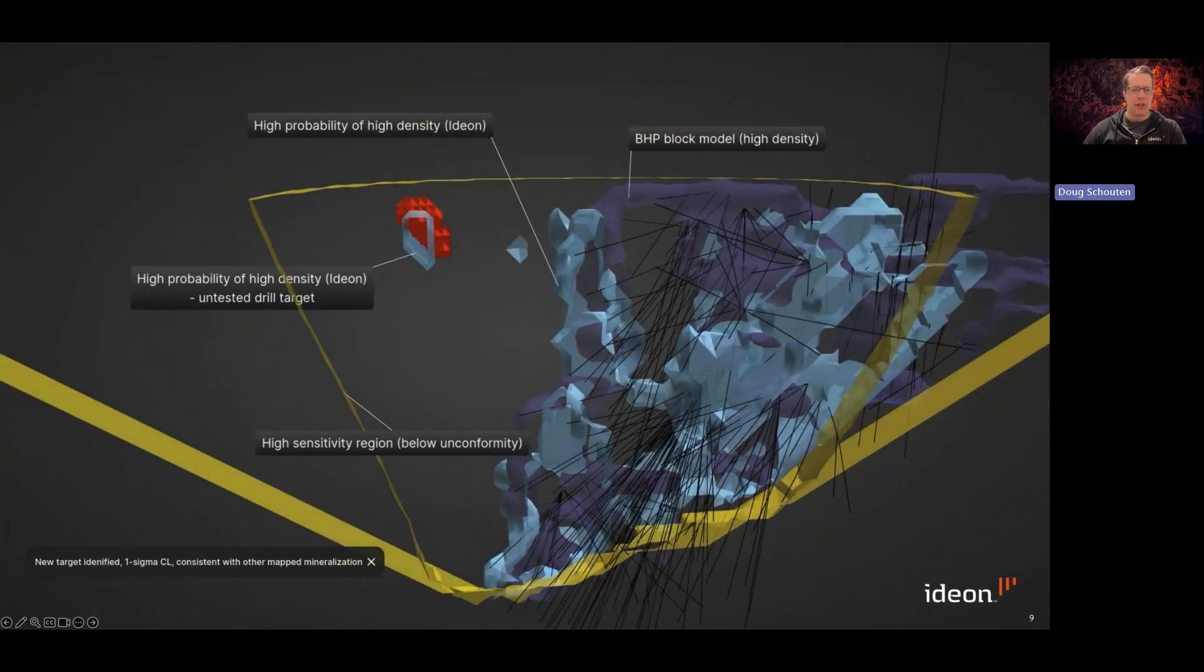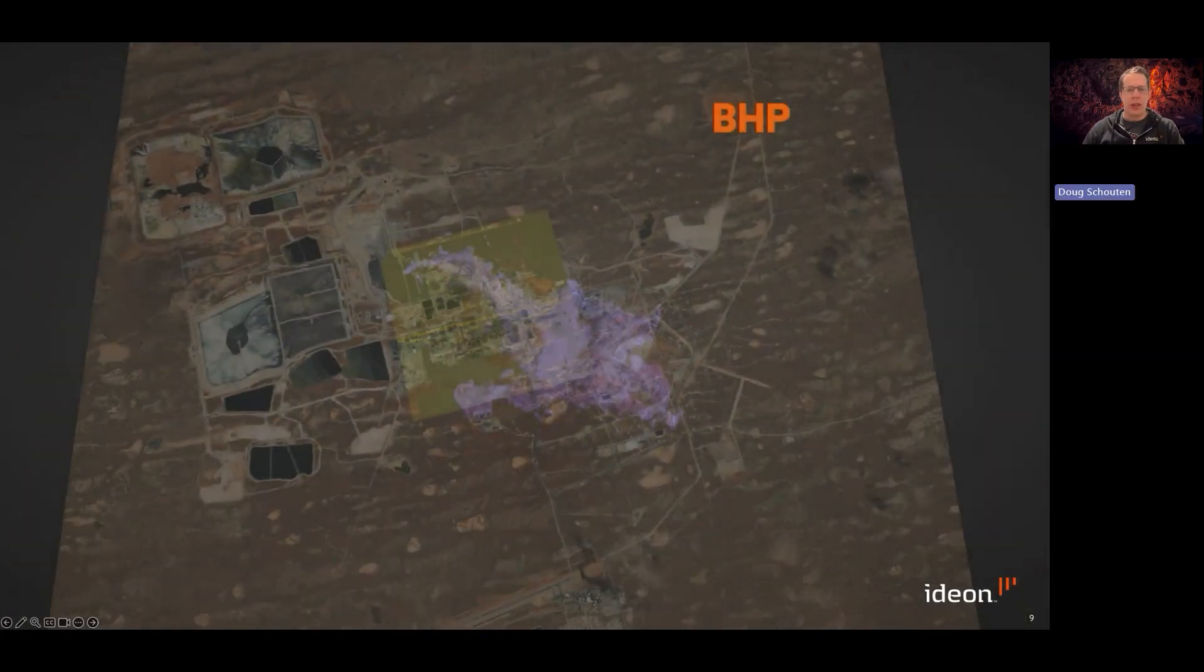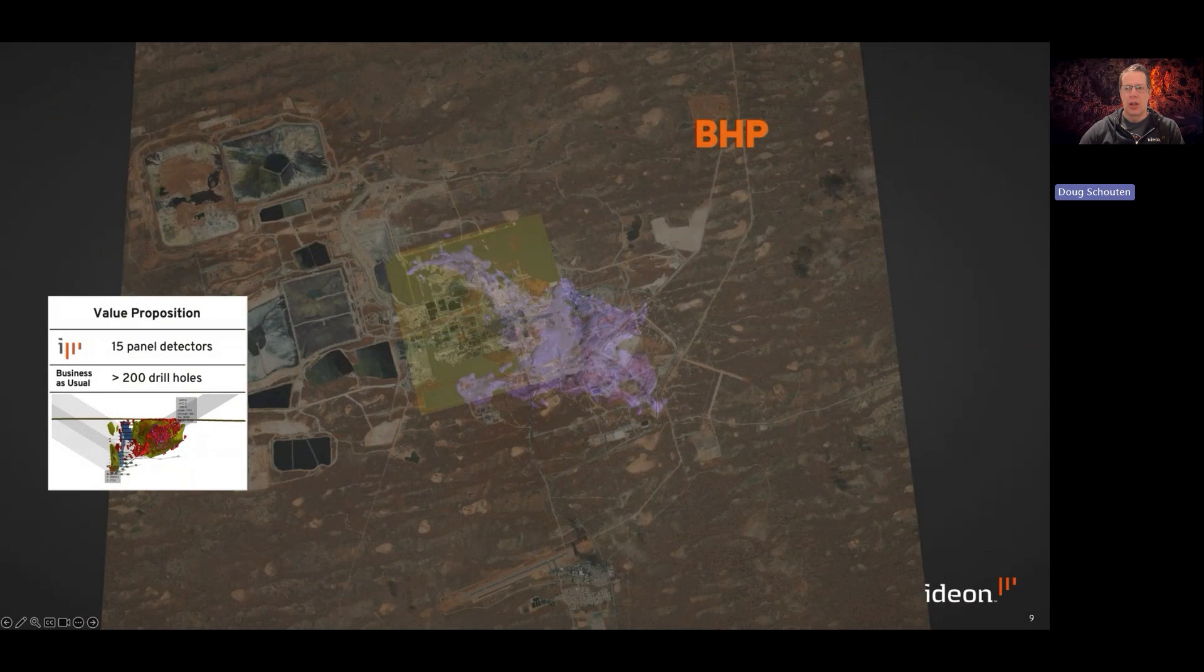And the high density structures correspond very well to the BHP block model where there's drilling. However, if we look to the areas without drilling, we see some interesting things here. We see a cyan surface that encompasses the high confidence, high density region identified by the muon tomography data alone in the region where there's extensive drilling, showing very good comparison to the BHP block model, but then a very interesting untested drill target to the left of about 100 meters in dimension. So the BHP Olympic Dam project is going very, very well, and we're very thankful to the BHP TAD and Olympic Dam teams for the support on this project.